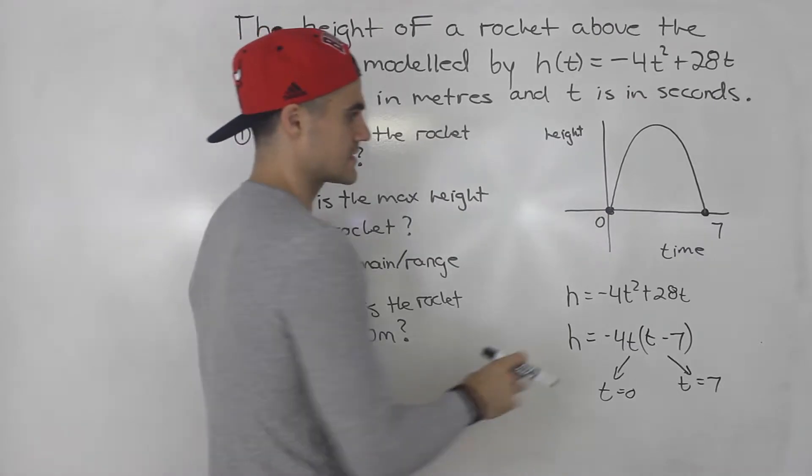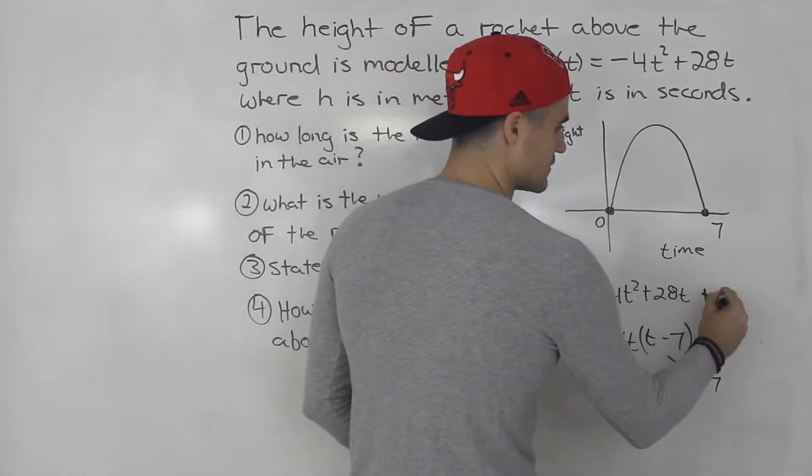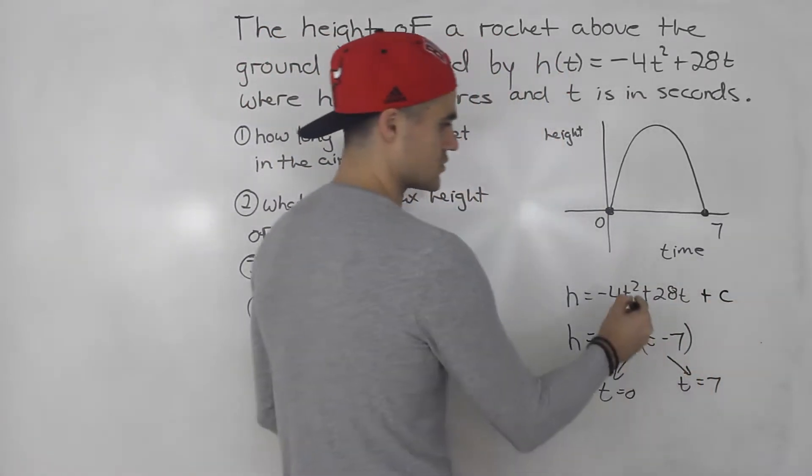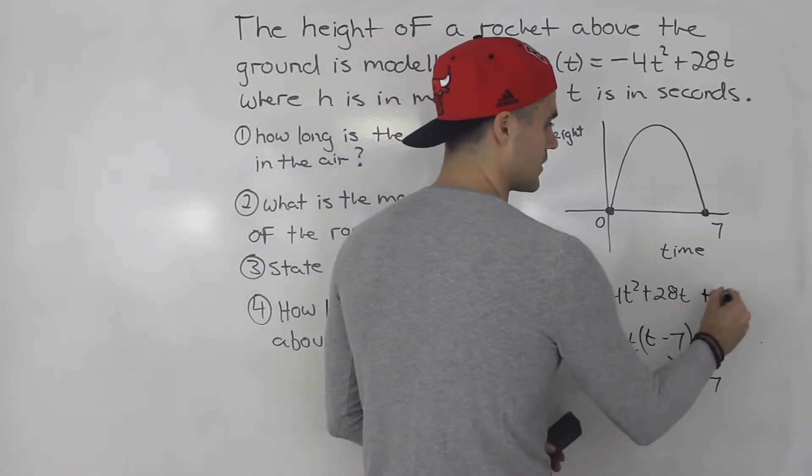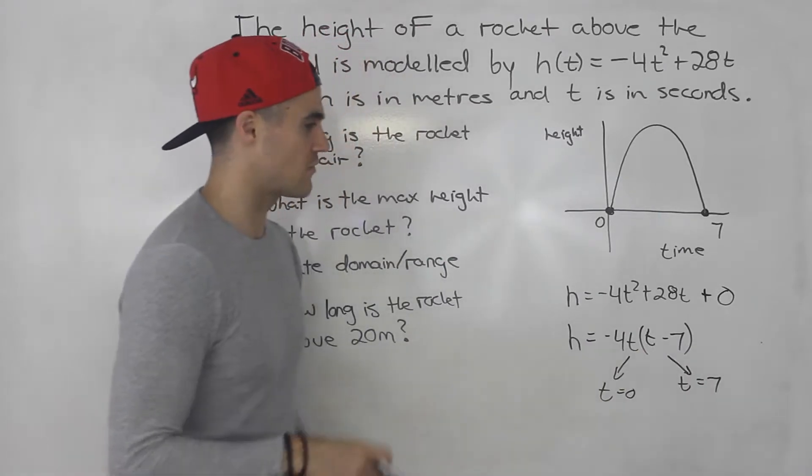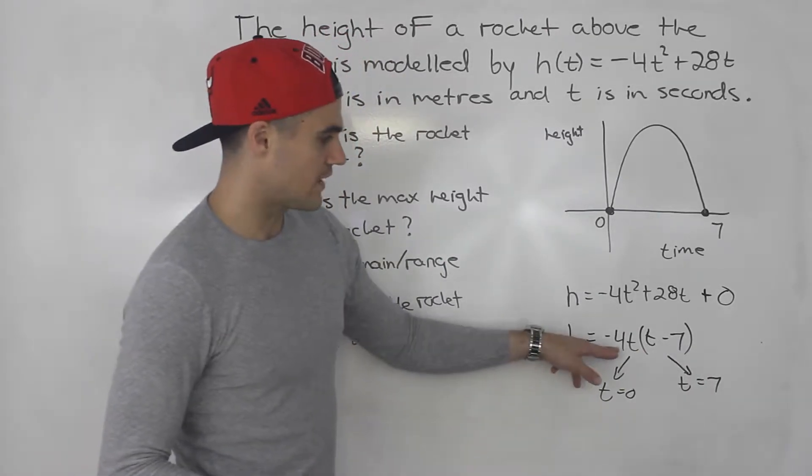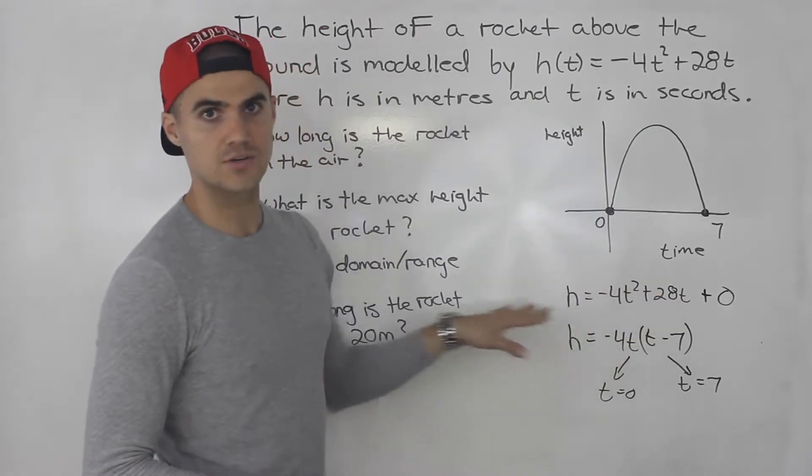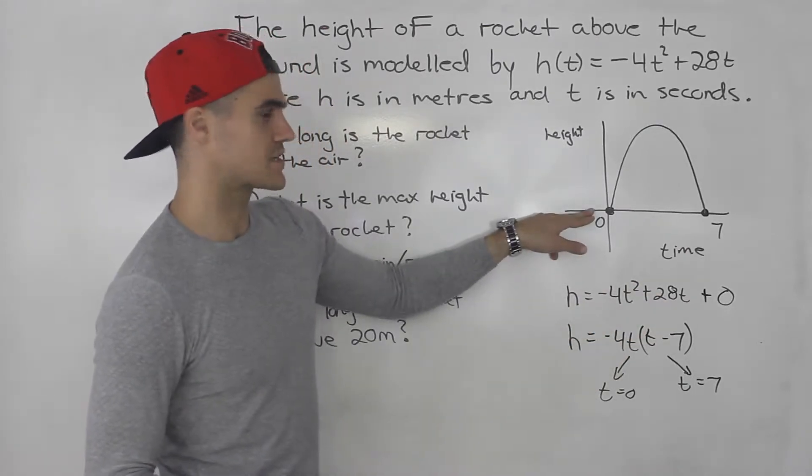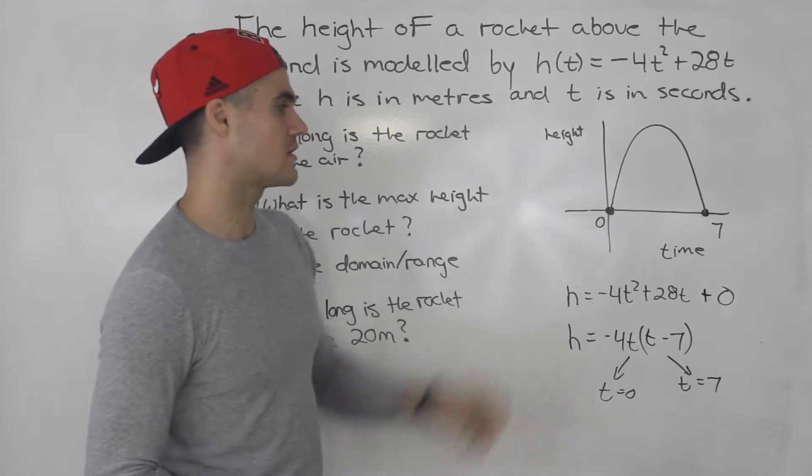Now notice that this quadratic here had no c value. It's usually ax² + bx + c, so notice there's like a plus 0 here. Whenever there's a c value of 0, I've mentioned this before, one of the intercepts is always going to be 0 because you're always going to be able to factor out an x or a t. So you know it's always going to start on the ground.